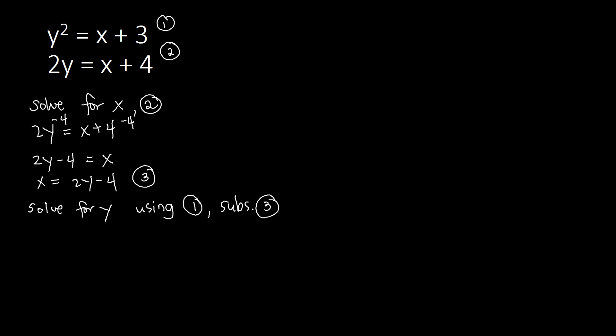So we have our equation 1, y squared is equal to x plus 3. We are going to substitute equation 3, wherein our x is equal to 2y minus 4, meaning on the equation here, we will be replacing x with 2y minus 4. So we have y squared equal to, we have an x, replace that with 2y minus 4, and then plus 3. Then we try to simplify that one. We have y squared is equal to 2y minus 4 plus 3. So combining like terms, y squared is equal to 2y, negative 4 plus 3, that is equal to negative 1.